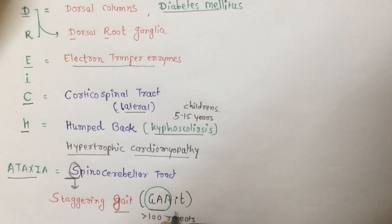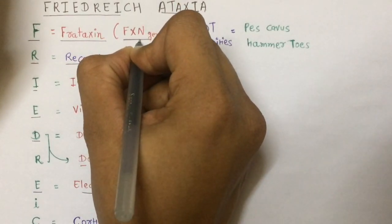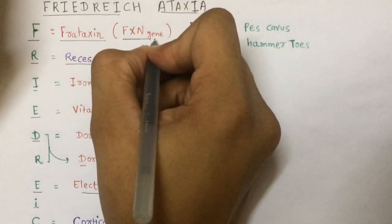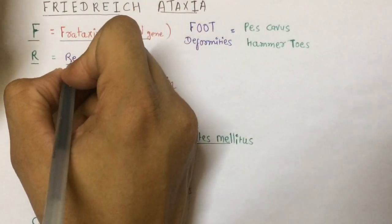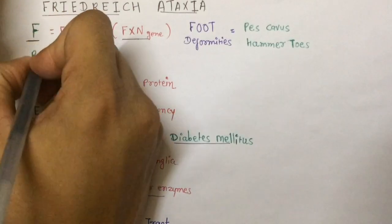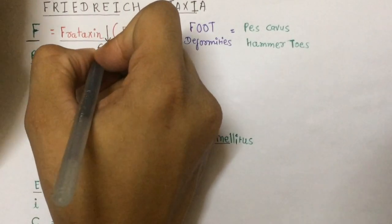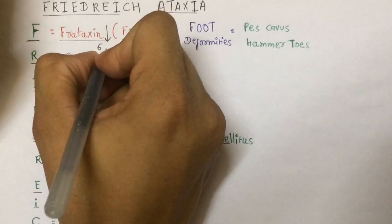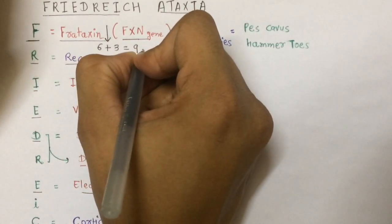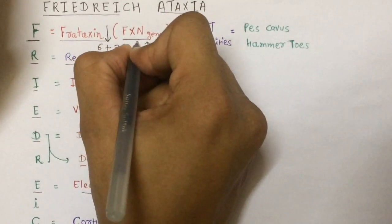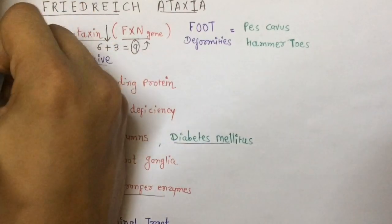This trinucleotide repeat expansion leads to gene silencing of FXN, resulting in decreased expression of frataxin. Additionally, F is the sixth letter of the alphabet, and adding 3 for the trinucleotide repeat gives 6 plus 3 equals 9 — so you can remember that the FXN gene is located on chromosome 9. From F, you can also remember frequent falling.